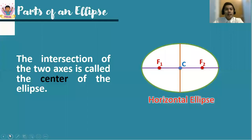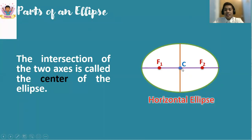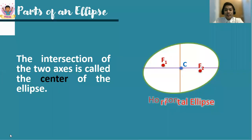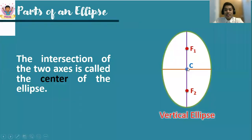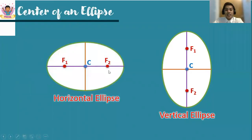The intersection of the two axes is called the center of the ellipse. Observe the center of the horizontal ellipse — the minor axis and the major axis intersect at that point, which we name as center or point C. For the vertical ellipse, it is still the intersection of the minor axis and the major axis. Notice that the center is collinear with the two foci.